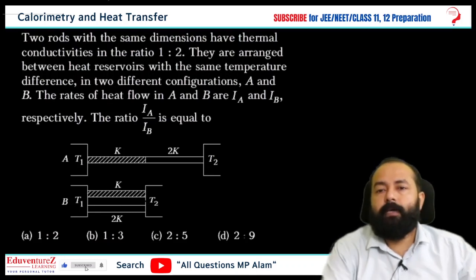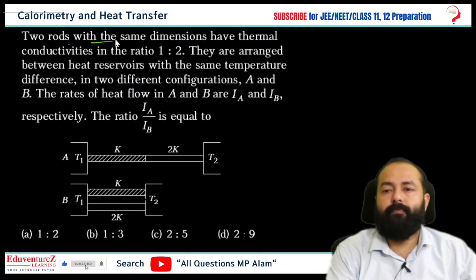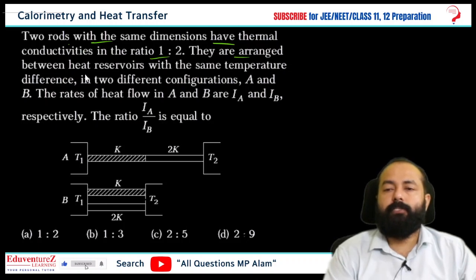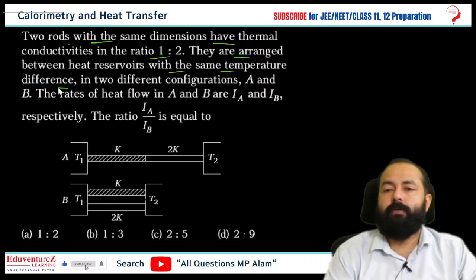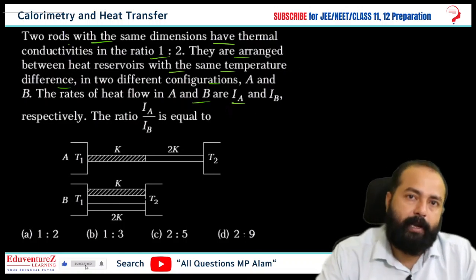A student's question is here: Two rods with the same dimensions have thermal conductivity in the ratio 1 to 2. They are arranged between heat reservoirs with the same temperature difference in two configurations A and B. The rate of heat flow in A and B is IA and IB. What is the ratio of IA and IB?